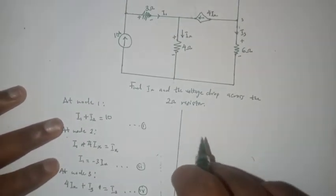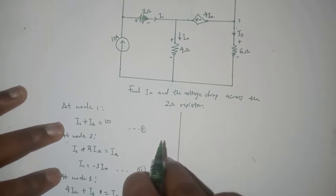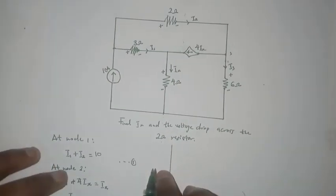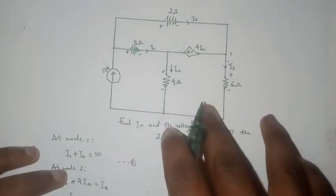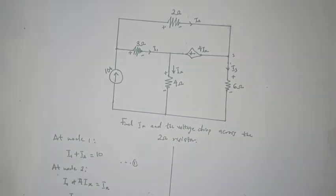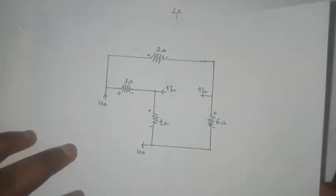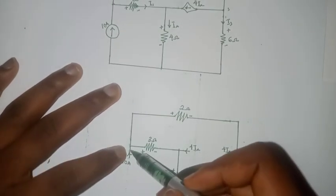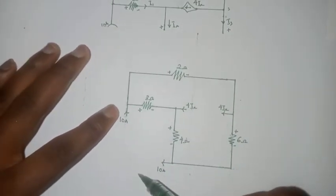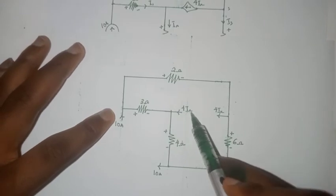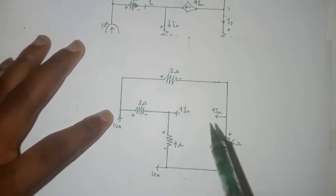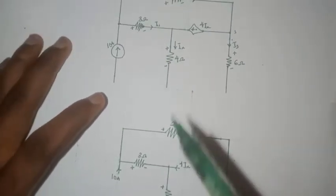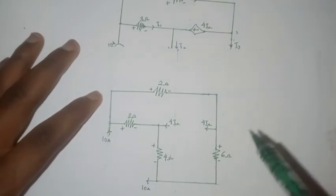So next thing we want to do is to write a KVL equation. There's another way to visualize the circuit. You can also think of this circuit with current, say 10 amperes feeding in here, 10 amperes being fed out here, 4ix is entering here and 4ix is leaving here.